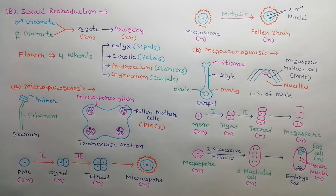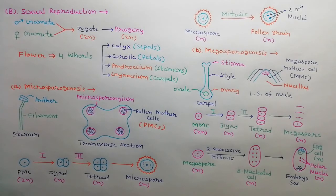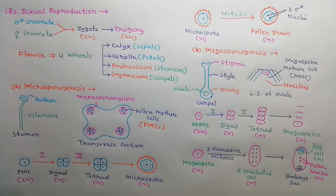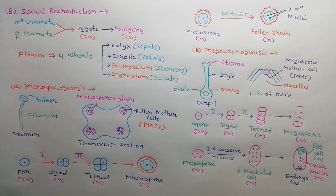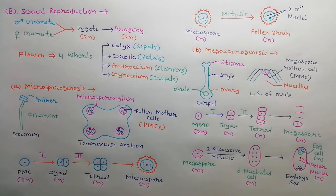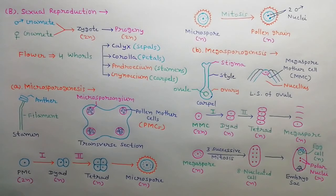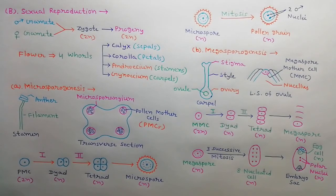The nucleus of the megaspore undergoes three successive mitotic divisions, resulting in an eight-nucleate cell. This eight-nucleate cell is further modified into an embryo sac, in which two polar nuclei and one egg cell are important.